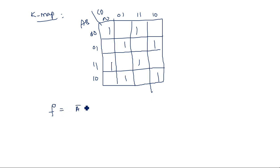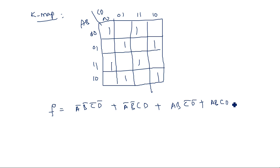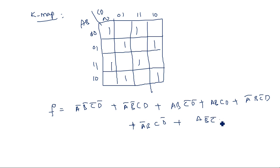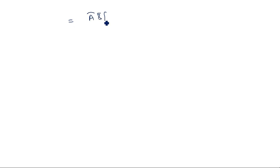Since no grouping is possible in the K-map, f equals the sum of minterms: f = A'B'C'D' + A'B'CD + A'BC'D + A'BCD' + AB'C'D + AB'CD' + ABC'D' ... wait — f equals A'B'C'D' plus A'B'CD plus ABCD plus A'B'CD plus terms involving AB. Taking A'B' common gives A'B'(C'D' + CD) plus other groupings.